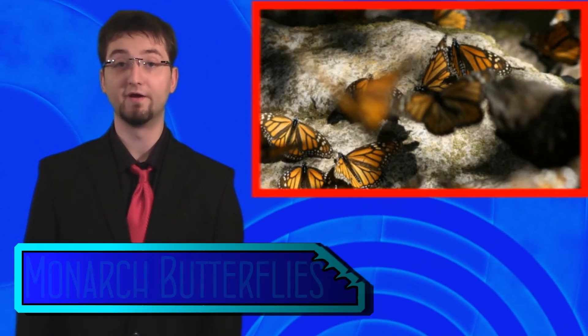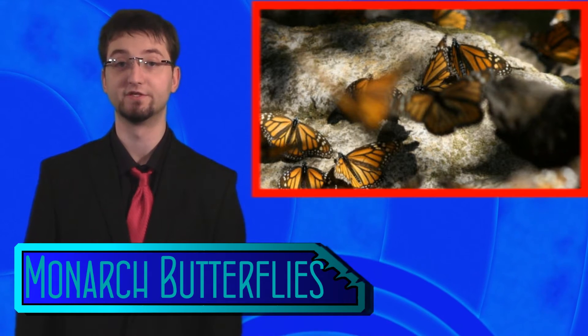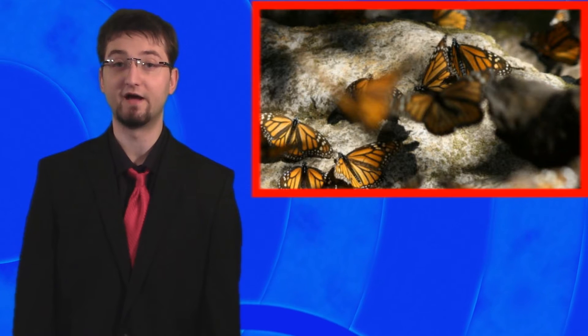Every year, the monarch butterfly takes a several-thousand-mile trip from North America to Central Mexico. The migration itself is well understood, except for the understanding of how the monarch butterflies navigate that entire distance.